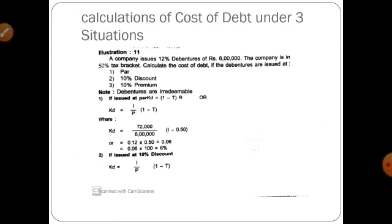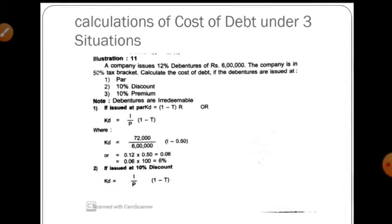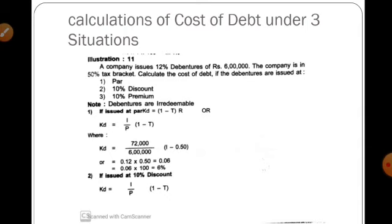Now we will move to the next important concept: calculation of cost of debt under 3 situations. The heading is visible on the screen. The three situations are: debentures issued at par — meaning exactly the face value; debentures issued at a discount — less than the face value; and debentures issued at a premium — more than the face value. We will see one problem, Illustration 11, taken from the textbook.